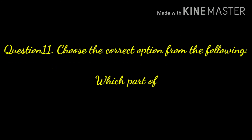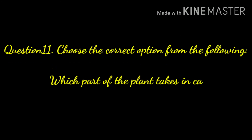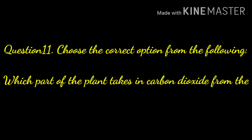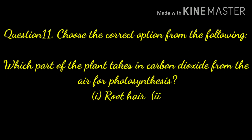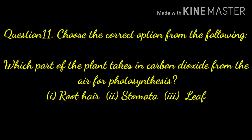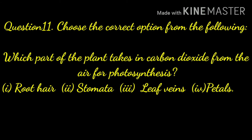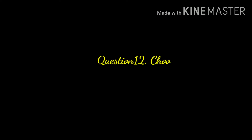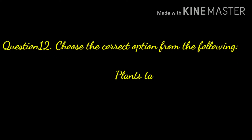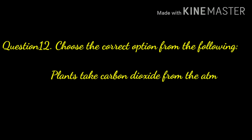Question number eleven: choose the correct option — which part of the plant takes in carbon dioxide from the air for photosynthesis? Options are root hair, stomata, leaf veins, or petals. The answer is stomata.